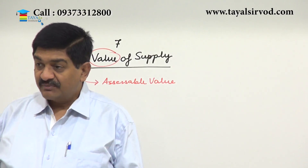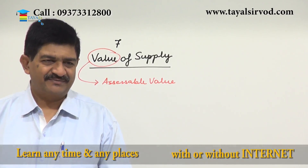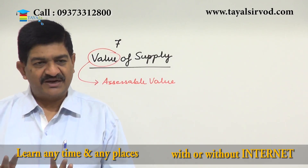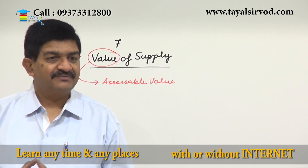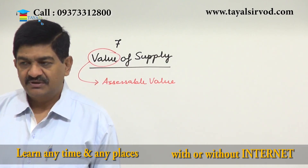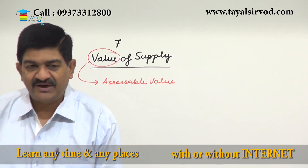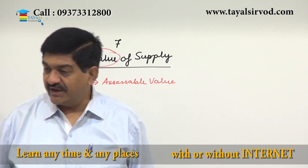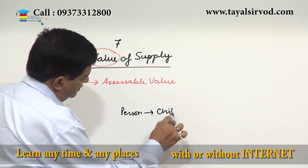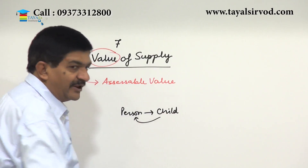Note that for children, the same principle applies — they are part of the family if dependent. However, spouse and children are always considered family under the first sub-clause. Under the second clause, parents, grandparents, brother, and sister are family only if they are dependent on the person. So the situation is: for a person, his child is always a member of the family; but for the child, his parents are family only if they are dependent on him.